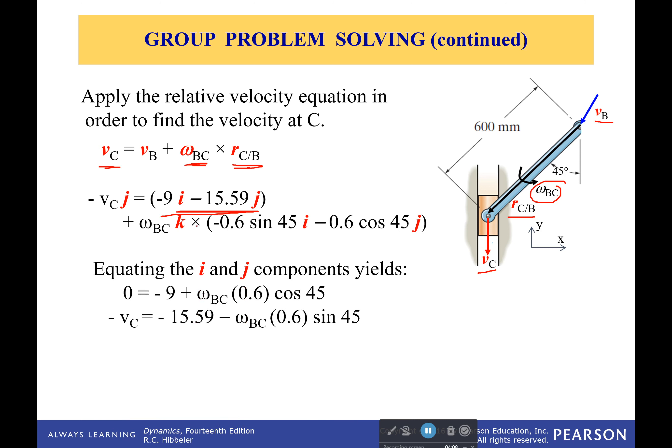And we equate the i and j components, being very, very careful. K cross i gave me positive j, but it was already negative, so it's a negative value. K cross j gives me negative i, so it's a negative value, so it becomes a positive value. So we have negative 9 here and positive right here. And we plug our numbers in. And we get that our angular velocity would be 21.2 radians per second.